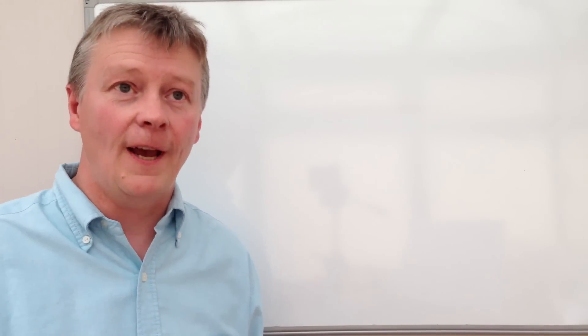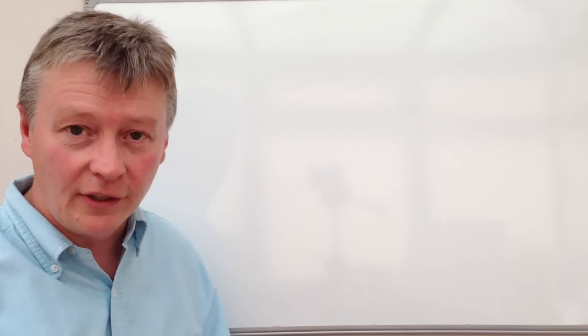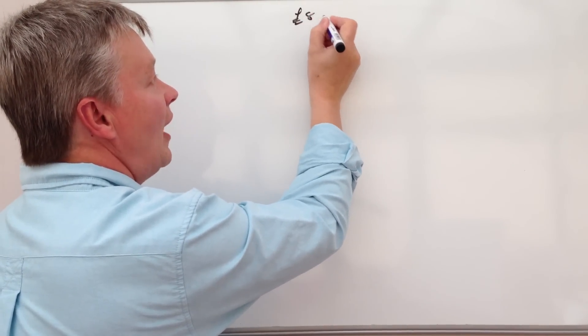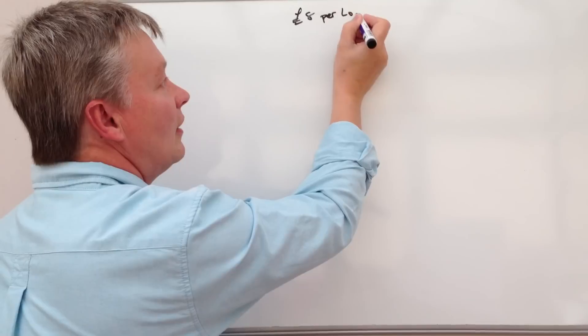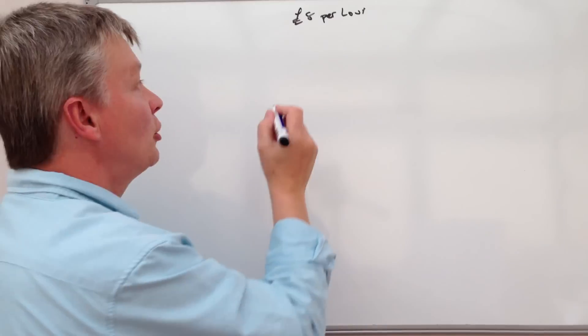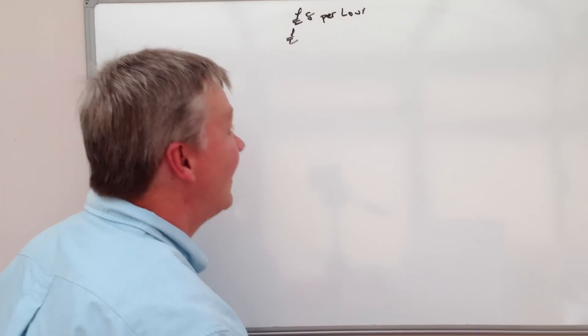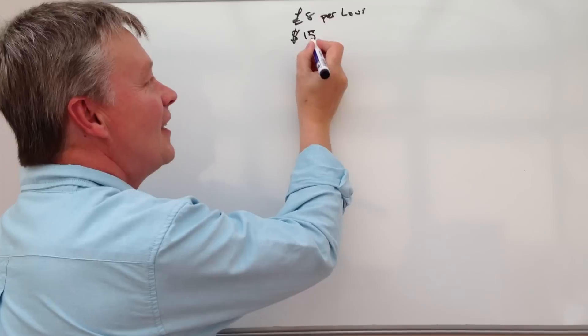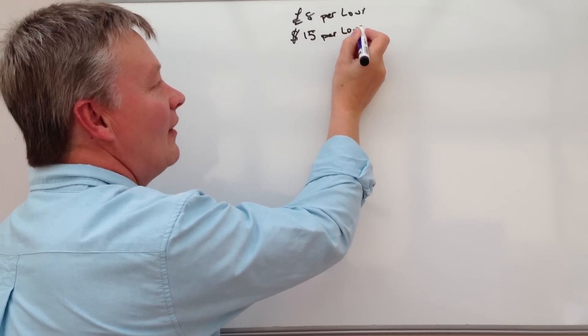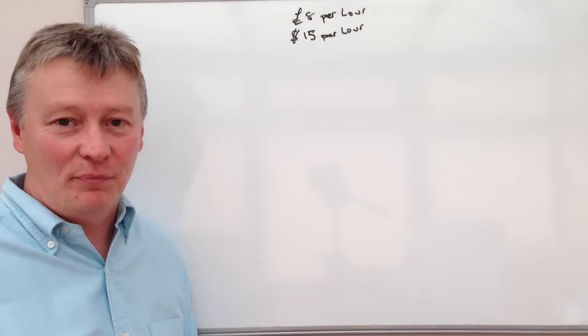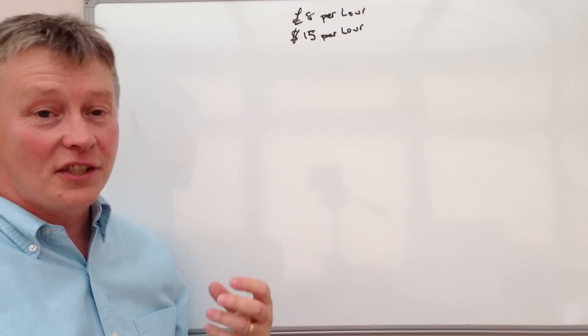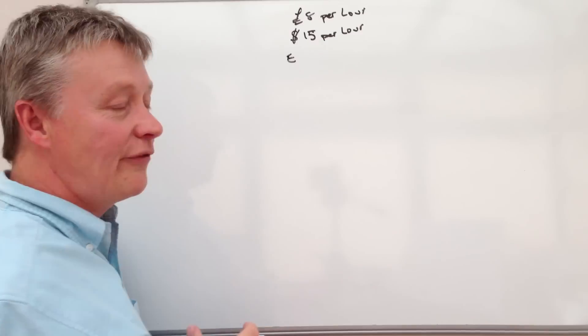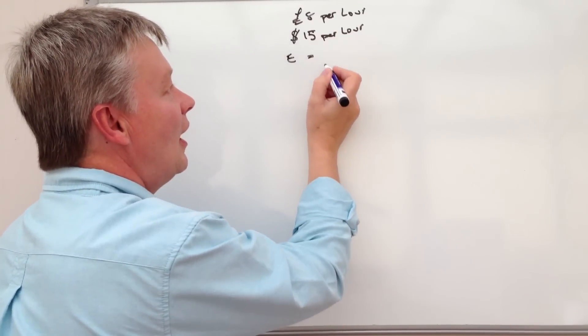So a very good example of that would be earnings. Let's say in the UK that you work at a job and that particular job pays you £8 per hour, or let's say in America it could be $15 per hour, or whatever it might be, whatever your contracted pay is. The point is really that this is constant. So if we wrote that out as an equation, we would write it out as something like E for earnings equals, let's say,